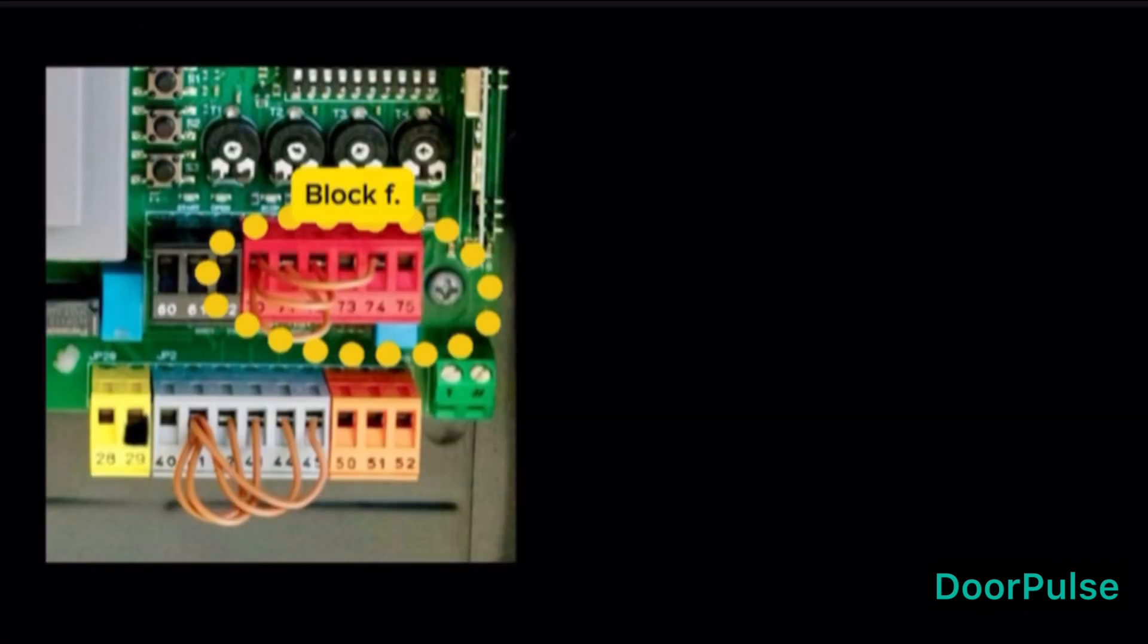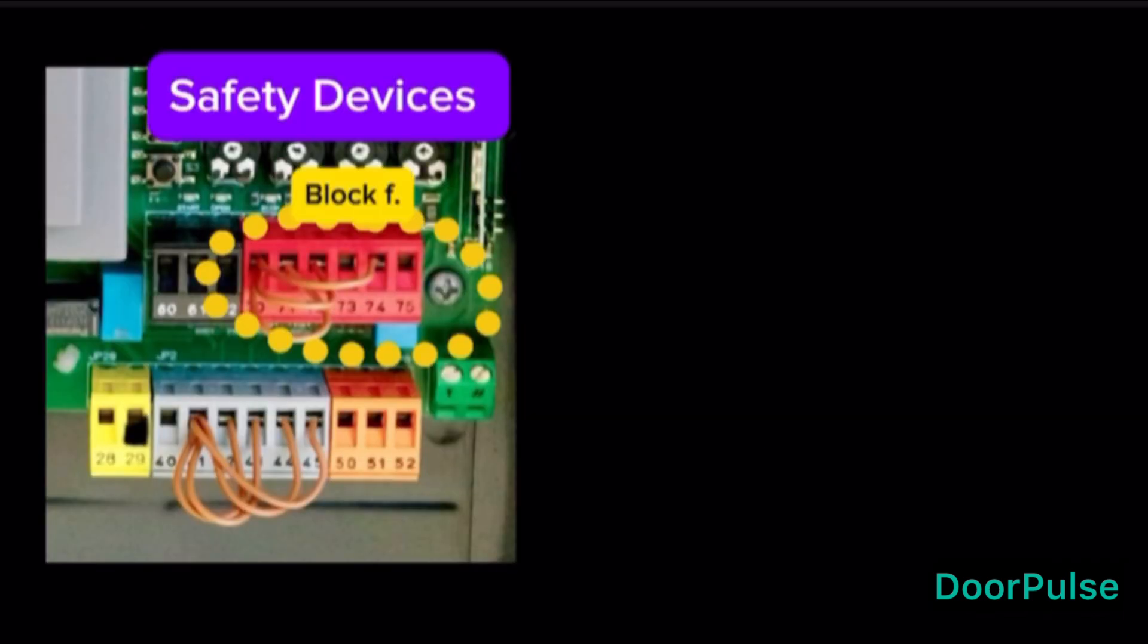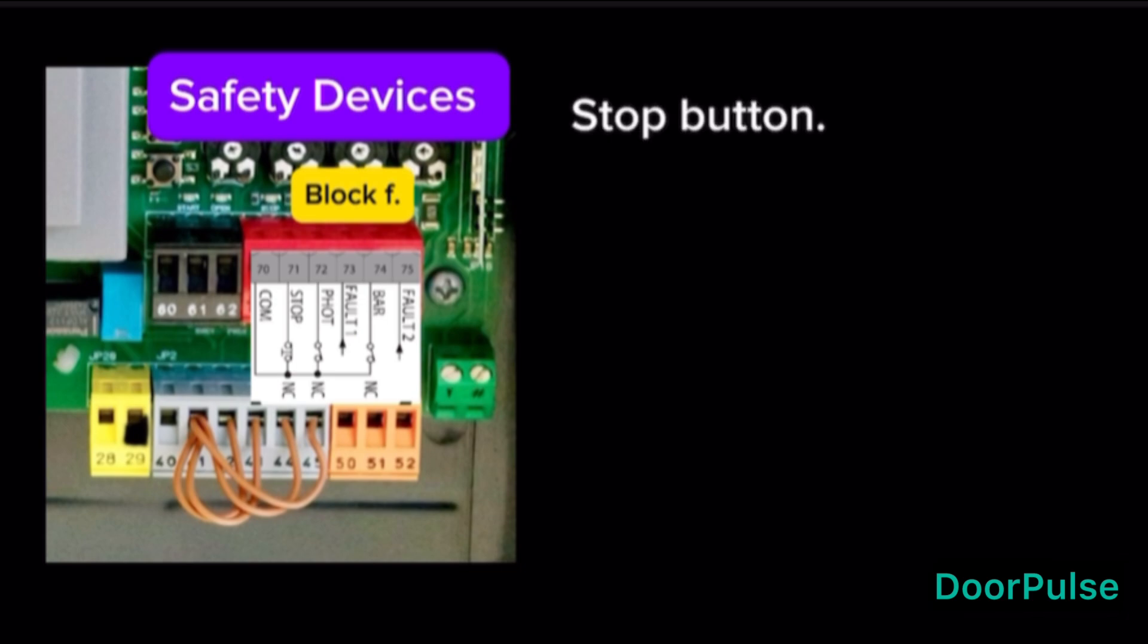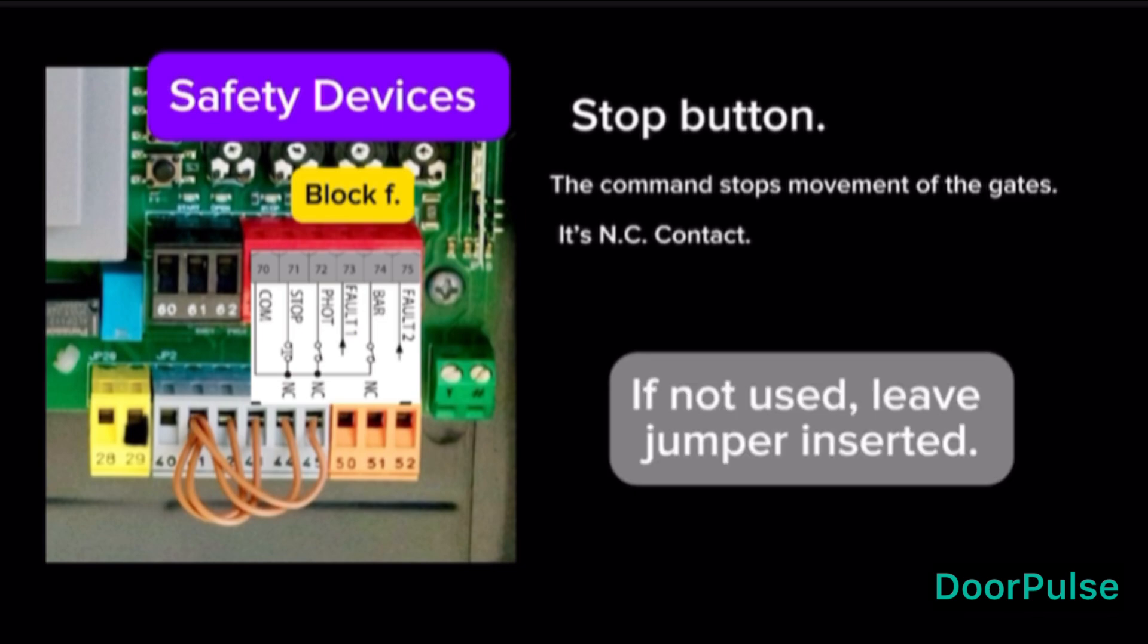Block F, Safety Devices Block. Terminal 70 is common for this safety devices like stop, photo, and bar inputs. Terminal 71, stop button. The command stops movement of the gates. It's NC contact. If not used, leave jumper inserted.